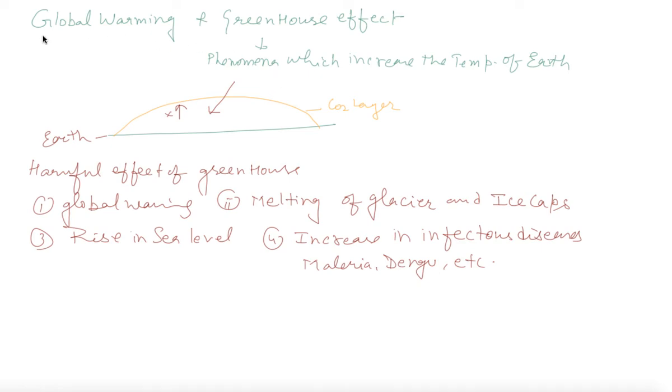Yes my dear students, now global warming and greenhouse effect - you know very well from lower classes. Greenhouse effect is the phenomenon which increases the temperature on the earth. Suppose this green layer is earth and this is a layer of CO2. When a cloud is there on the earth, the sun's heat will come on the earth but cannot close, so temperature of a region is increased.